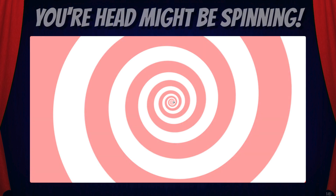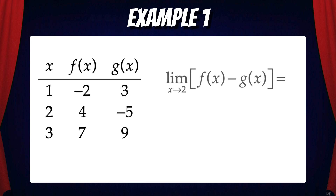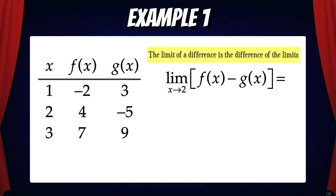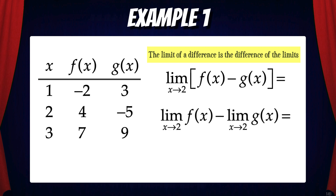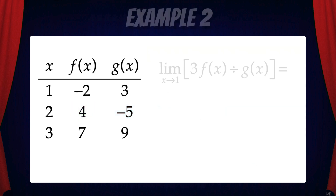Let's look at some examples of how they're applied. Suppose f and g are two continuous functions and a table of selected values is shown. Let's find the limit of f minus g as x approaches 2. This is a limit of a difference, and the limit of a difference is the difference of the limits. So we can separate this into the limit of f as x approaches 2 and the limit of g as x approaches 2. Since we have continuous functions, we can get the values from the table. The limit of f as x approaches 2 equals 4 and the limit of g equals negative 5. Subtracting those values, we get 9.